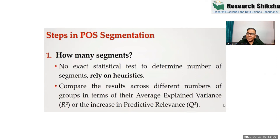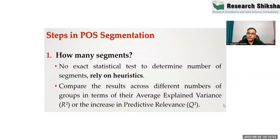Every individual segment should have more than 100 observations. If it is less than 100, then there is a possibility of outlier. If you find a segment where the number of observations is very low, that is not a real segment — those observations are basically known as outliers.